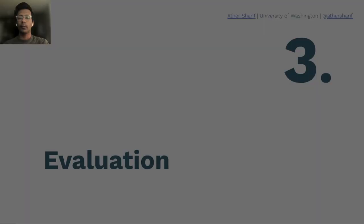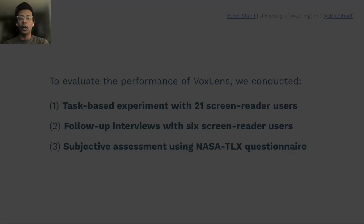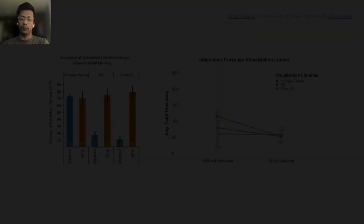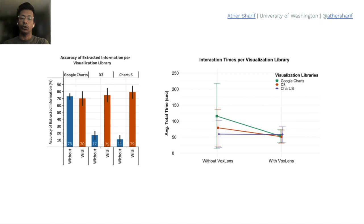We evaluated VoxLens using a task-based experiment with 21 screen reader users and conducted follow-up interviews, randomly selecting six of them. We compared their performance to 36 screen reader users who did not use VoxLens. The evaluation results are presented in two graphs: the first showing accuracy of extracted information per visualization library, and the second showing interaction times per visualization library.